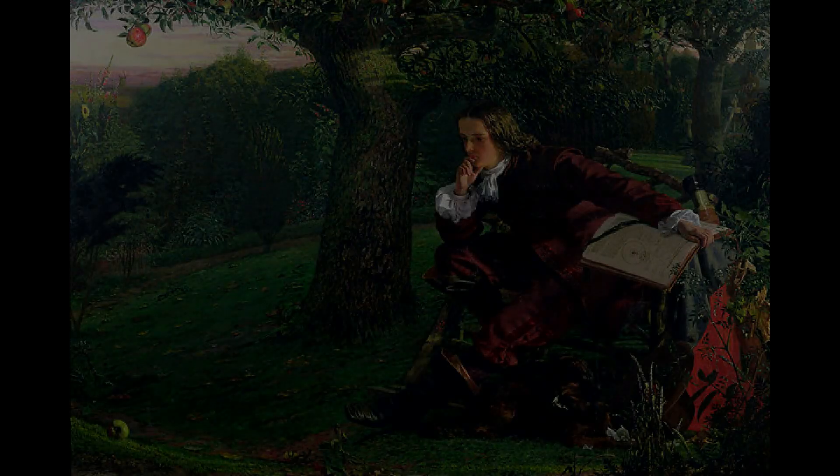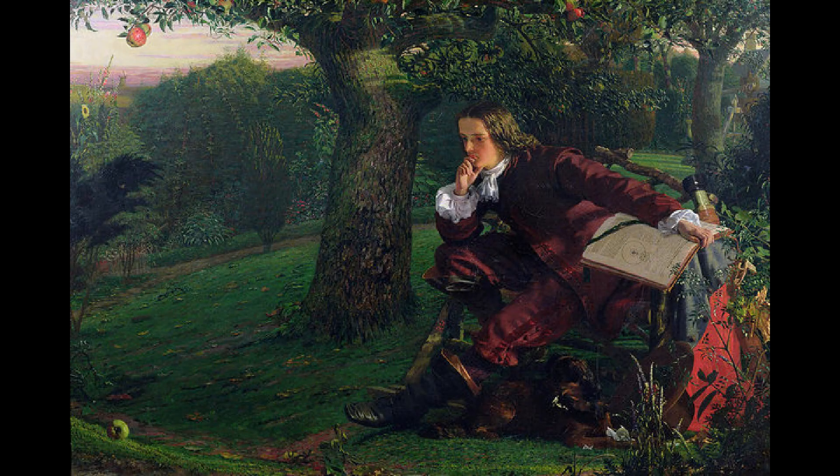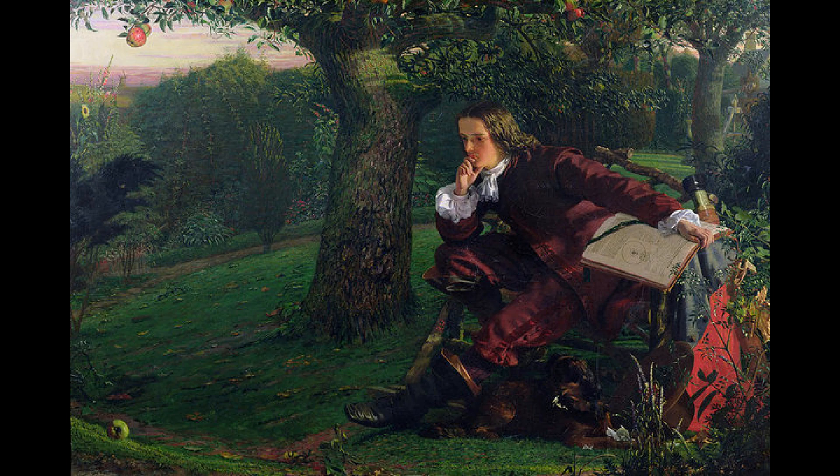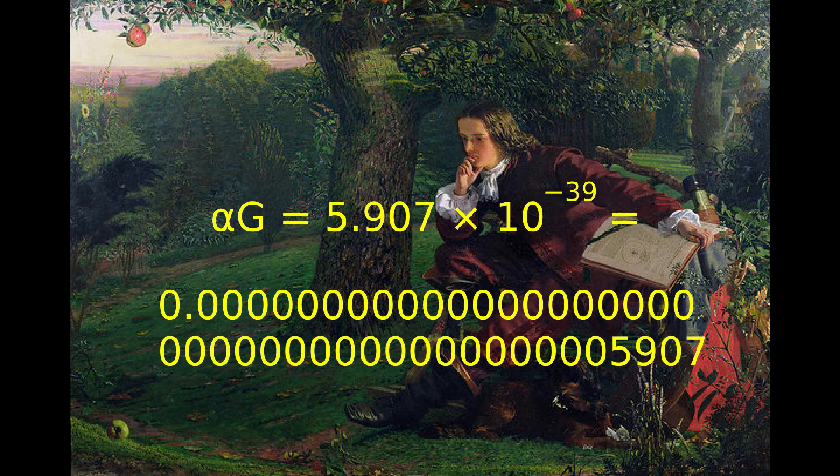Gravity and the Lives and Deaths of Stars. The gravitational force between an apple and the Earth pulls both together. The strength of gravity is determined by a dimensionless constant called the gravitational coupling constant, alpha sub g. Alpha sub g equals 5.907 times 10 to the power of minus 39.